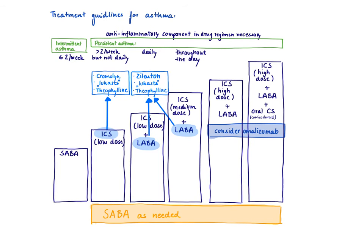For treatment, you always start with a short-acting beta-agonist (SABA), which would be albuterol, taken as needed. As long as you don't need it more than twice a week, this is okay. Once you have persistent asthma, you need an anti-inflammatory component, so you start with a low-dose inhaled corticosteroid (ICS). The next step adds a long-acting beta-agonist (LABA) for longer-term bronchodilation. Then you can increase the ICS dose to medium and then high dose. For very severe asthma — steps 5 and 6 — you can add an oral corticosteroid. If there is an allergic component, you could consider omalizumab, our anti-IgE antibody.